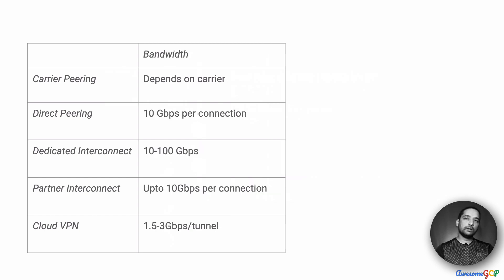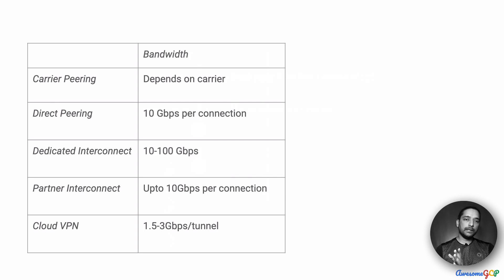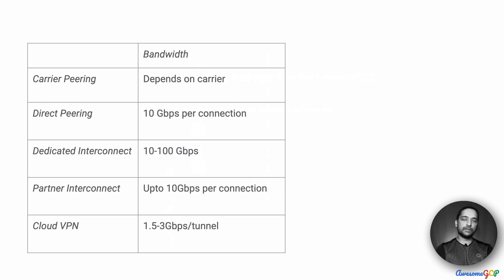The third requirement was bandwidth — we need fairly high bandwidth. Of the available options, the one that provides the kind of bandwidth we require is Dedicated Interconnect, which offers 10 to 100 Gbps. You could potentially get that with Direct Peering, but per connection you get only 10 Gbps, so there is more work to reach the bandwidth we require. The others depend on the public internet or an intermediate service provider and usually have much lesser bandwidth available. Therefore, in this comparison, Dedicated Interconnect suits us the most.